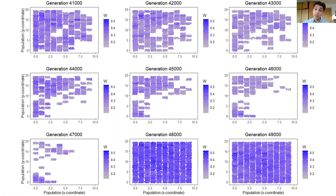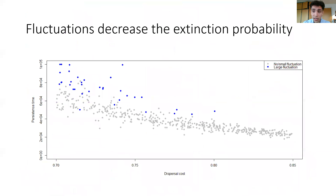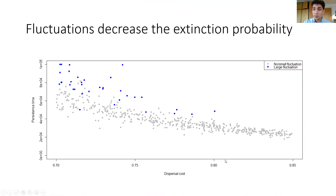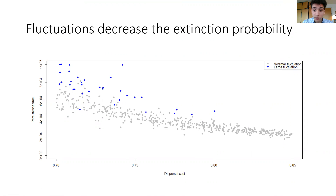So these fluctuations seem to be increasing fitness somehow. And looking at this effect for many different replicates over many different dispersal costs — so different levels of gene flow throughout the whole metapopulation — you can actually see that replicates with large fluctuations have a longer persistence time, typically.